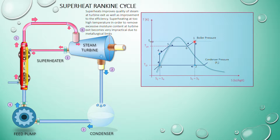Once it reaches the superheated temperature, it undergoes isentropic expansion to point 2. Comparing to the previous case where you have a vertical line straight down, after superheating you can see that the quality of the steam has been slightly improved — it is much closer to the dryness fraction of 1, that is the dry saturated curve.